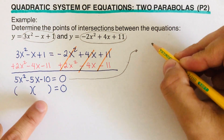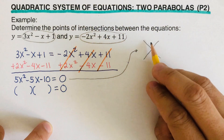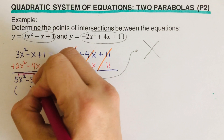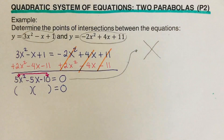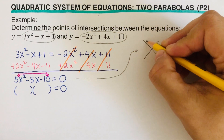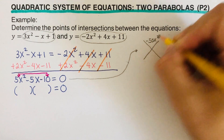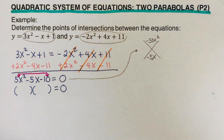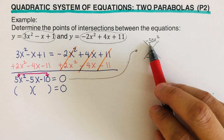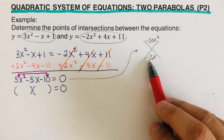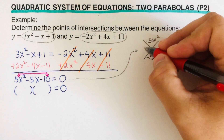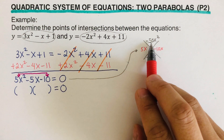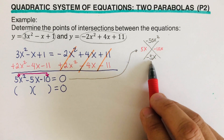Using the box and diamond method, we write the diamond first. The value on top of the diamond is the product of the first and last terms: 5x squared times negative 10 equals negative 50x squared. The value at the bottom is the middle term: negative 5x. We need two factors that multiply to negative 50x squared and add to negative 5x. Those factors are 5x and negative 10x, since 5x times negative 10x is negative 50x squared and 5x plus negative 10x is negative 5x.